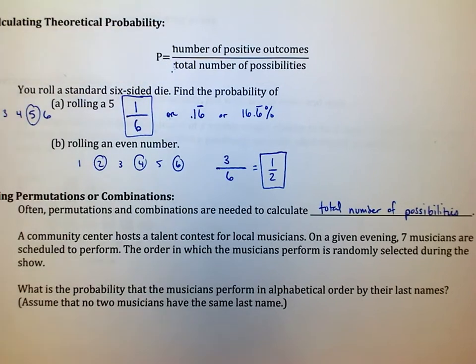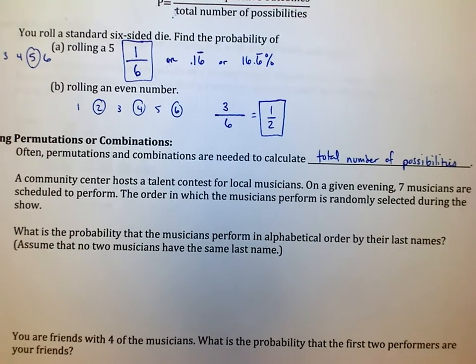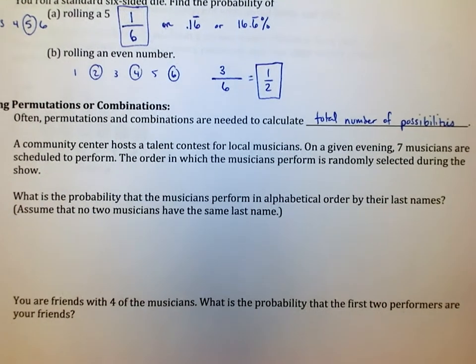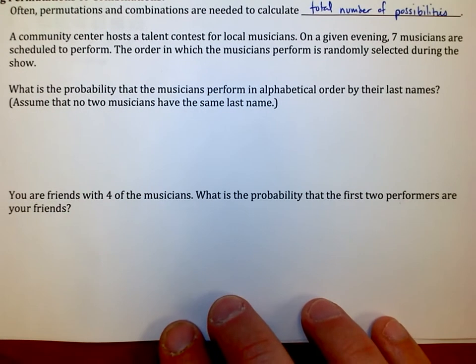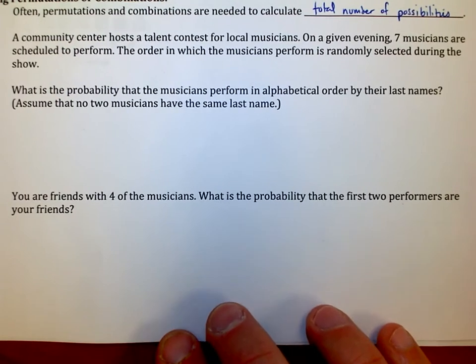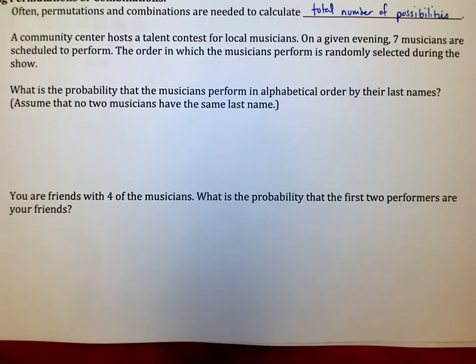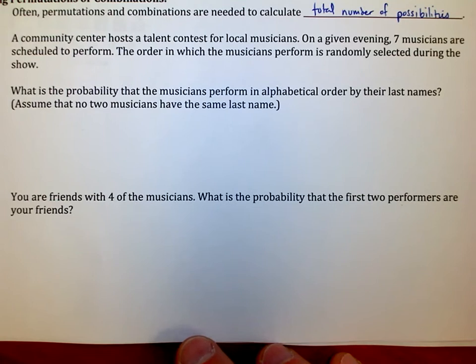So for instance, in this problem, a community center hosts a talent contest for local musicians. On a given evening, seven musicians are scheduled to perform. The order in which the musicians perform is randomly selected during the show. What is the probability that musicians perform in alphabetical order by their last names? And we're going to assume here that no two musicians have the same last name.